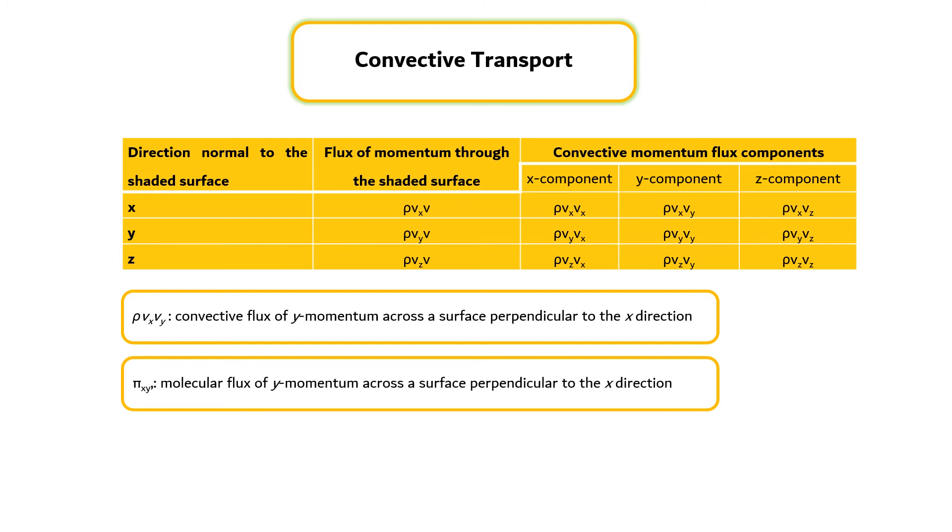The sign convention for both modes of transport is the same. The collection of nine scalar components given in the table can be represented as shown in equation 3.10. Since each component has two subscripts, each associated with a coordinate direction, ρvv is a second-order tensor. It is also called the convective momentum flux tensor.